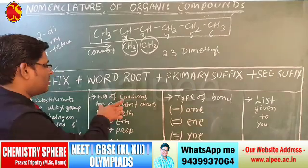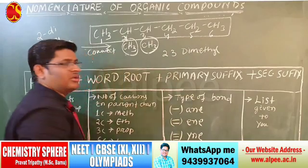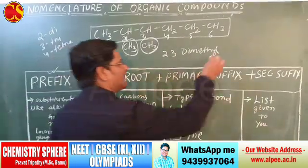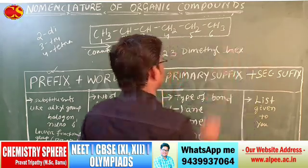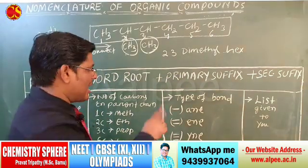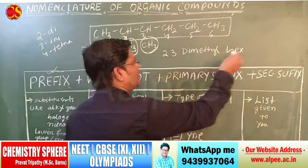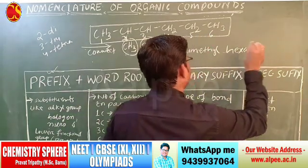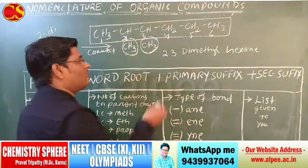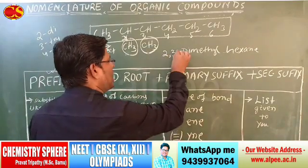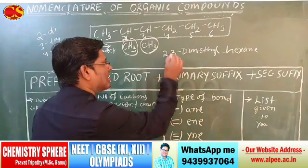The word root: the parent chain has 6 carbons, so it is 'hex.' The primary suffix: single bond is present, so write 'ane.' A comma is given between numbers, and a hyphen between a number and a letter. The name of this organic compound is 2,3-dimethylhexane.